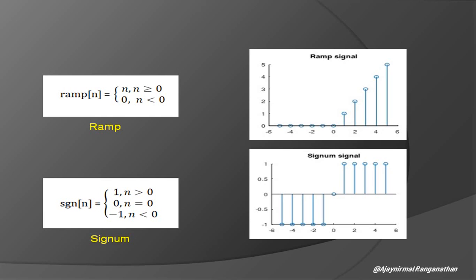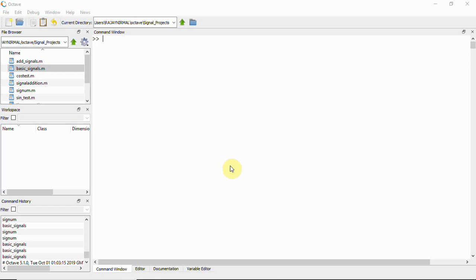The signum function is represented by sgn(n), which equals 1 for n greater than zero, 0 at n equal to zero, and minus 1 for n less than zero. These are the four signals we are going to generate.